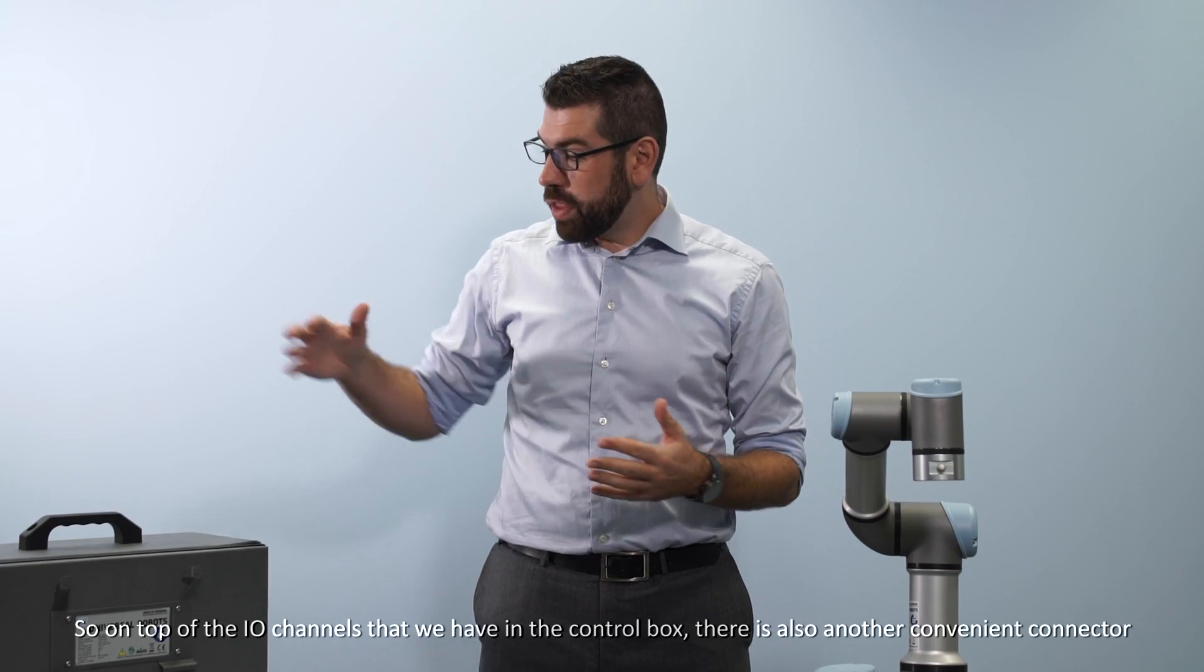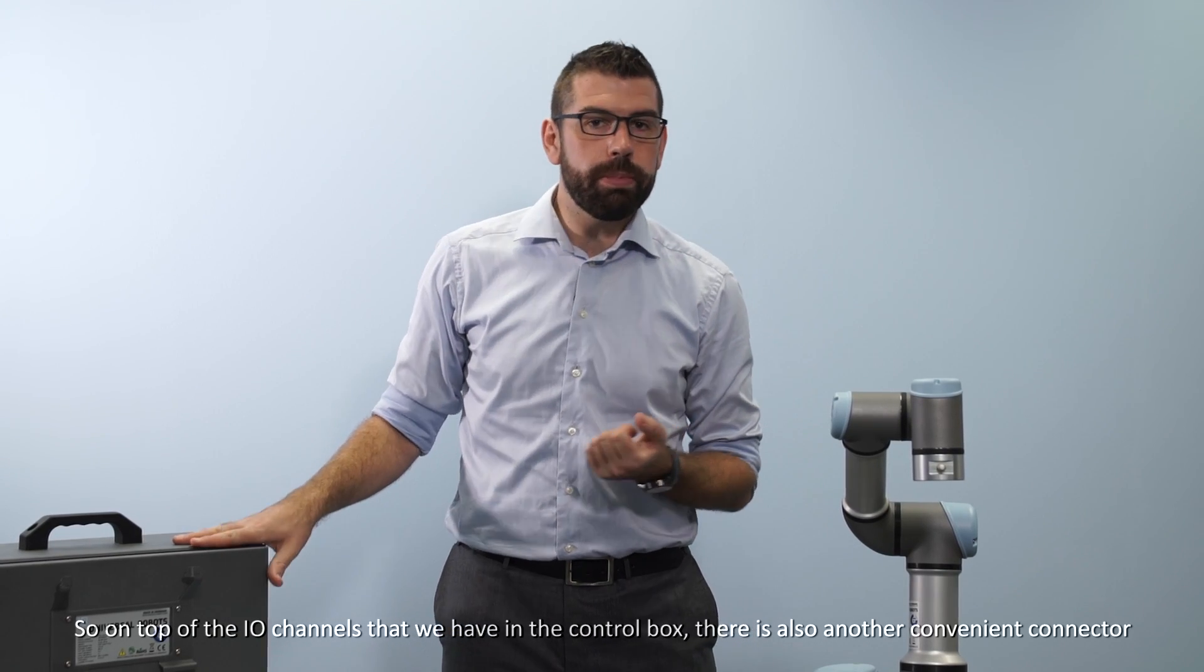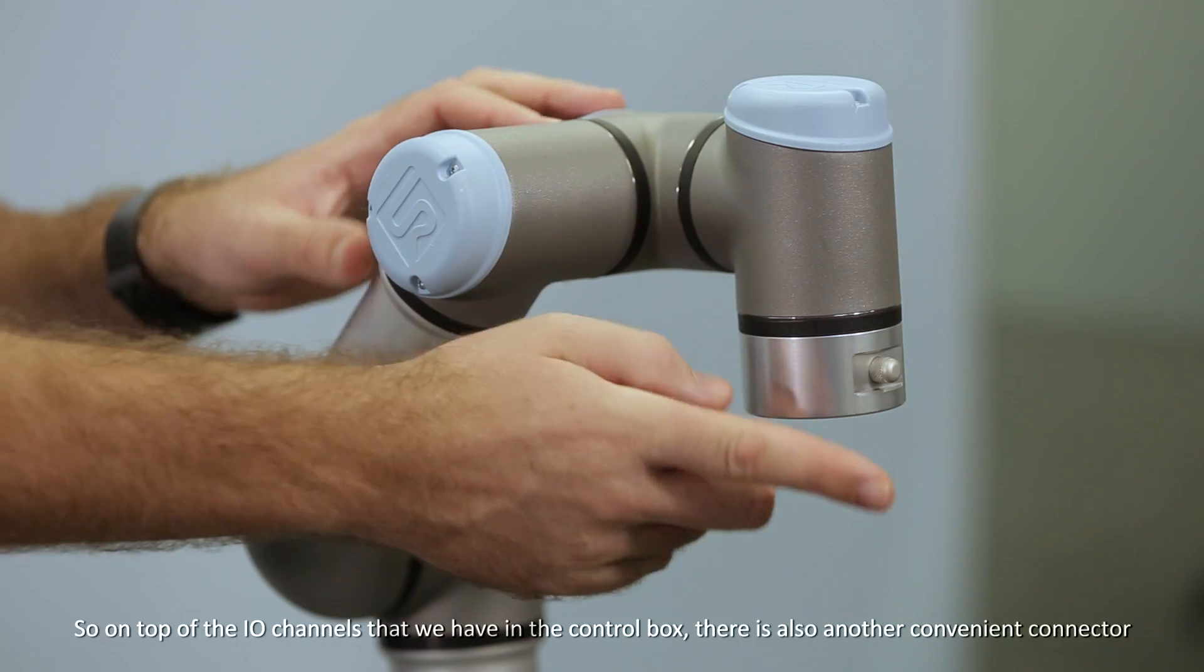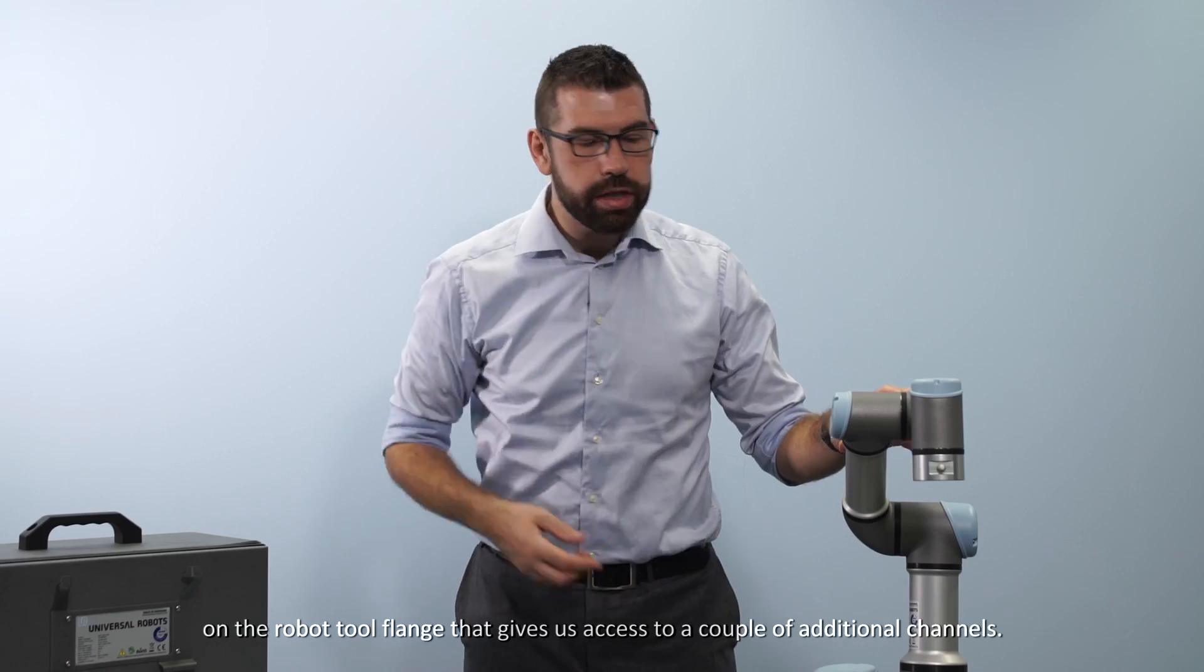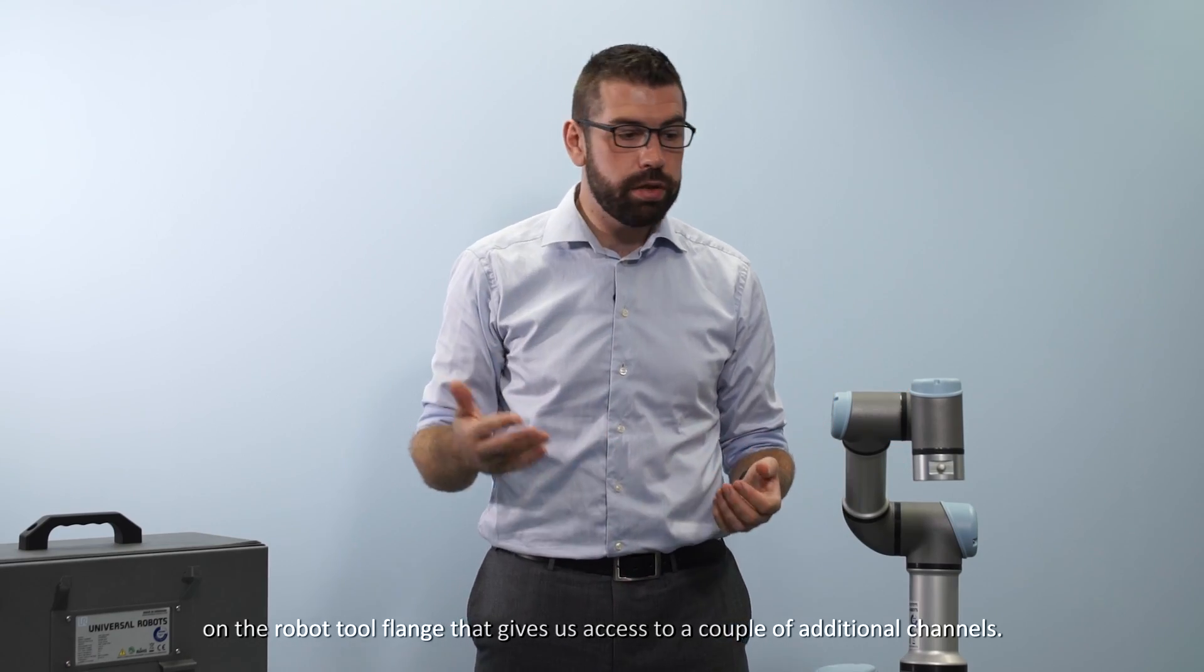On top of the I.O. channels that we have in the control box there is also another convenient connector on the robot tool flange that gives us access to a couple of additional channels.